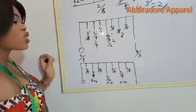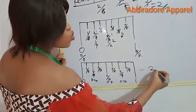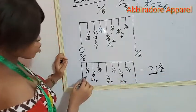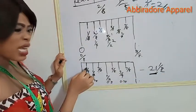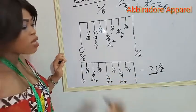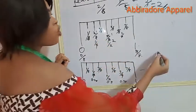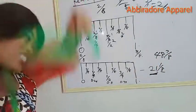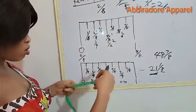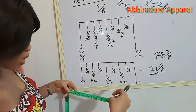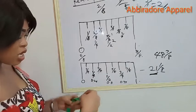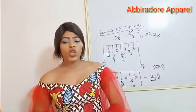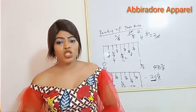In case I ask you to check 21 and 1/8 inches, know that 21 is the whole number while 1/8 is the fraction. After the 21 inches, the first line that follows is 21 and 1/8. In case I tell you to look for 48 and 7/8 inches, it means that after 48 inches, the next seven lines after 48 inches is your 48 and 7/8.